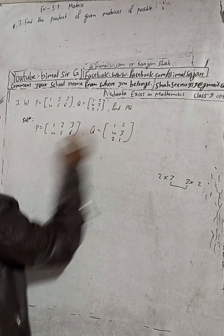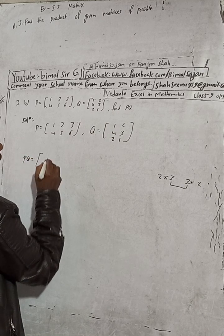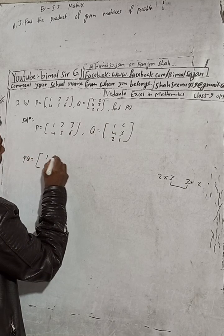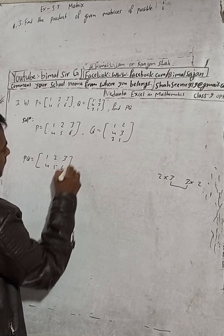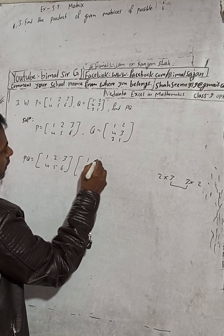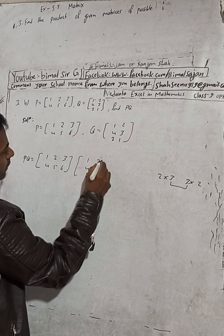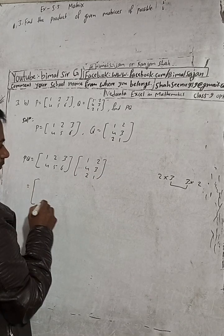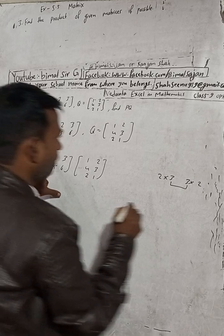Now let's find PQ. PQ is equal to the matrix with entries 1, 2, 3, 4, 5, 6 multiplied by the matrix with entries 1, 2, 4, 3, 2, 1.